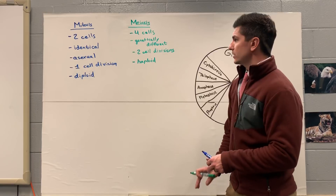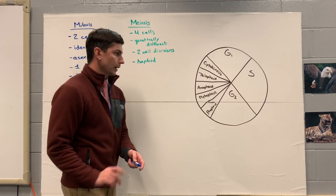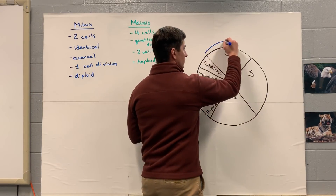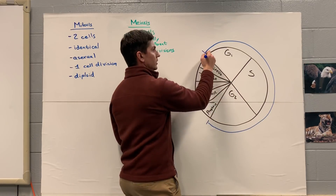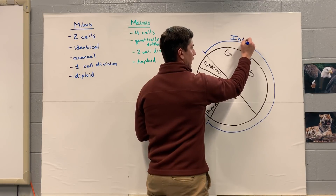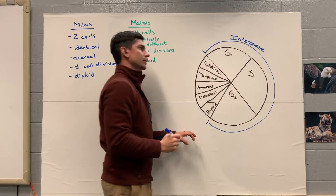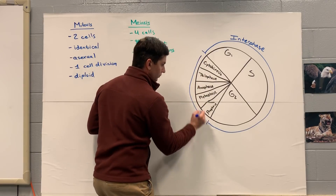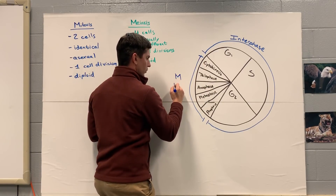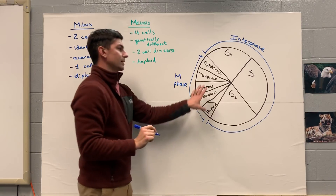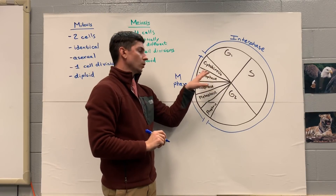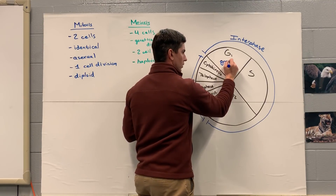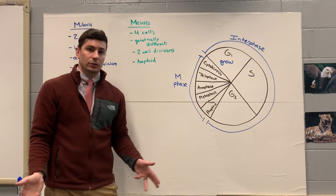So those are our main differences between mitosis and meiosis. If we come over to our cell cycle here, we're going to start talking about how mitosis and meiosis occur. This whole section, the largest section, is where cells spend most of their time. This is called interphase. There are three stages of interphase: G1, S, and G2. This over here is going to be called our M phase, or mitosis - this is when the cell actually divides. To start off with G1, we just had a cell divide. What's happening after the cell divides during G1 is it's simply going to grow.